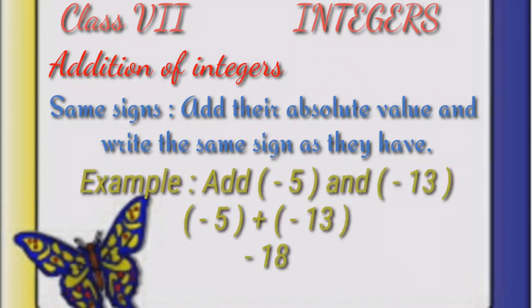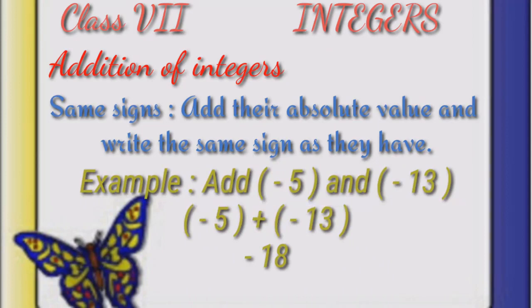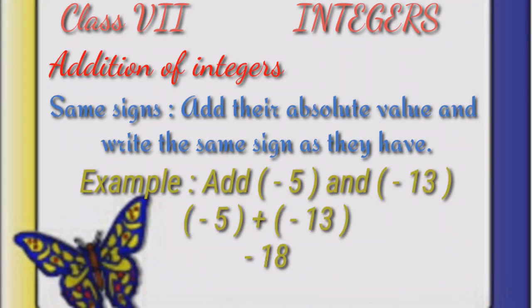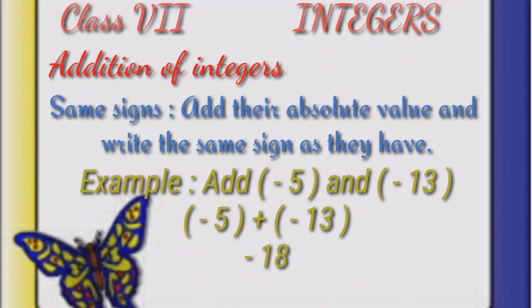For example, add minus 5 and minus 13. Here we can see both the integers are negative. So we will add the numerical value, that is 5 and 13. Their sum is 18, and they have the same sign, which is minus. So in the answer we will also write minus. Therefore, the sum of minus 5 and minus 13 is minus 18.